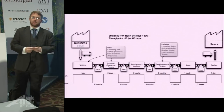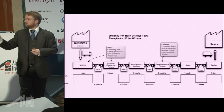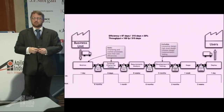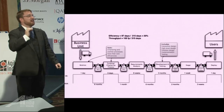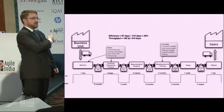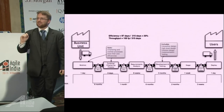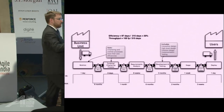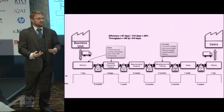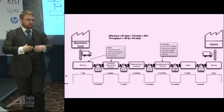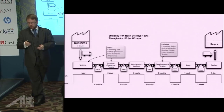This is a value stream map — this is a value stream. Can anyone tell me what this value stream map is for? Waterfall software development. I've used an agile lean process, a value stream map, to define a waterfall process. Why? Because we can. Any repeatable process that has a value at the end of it is a candidate for a value stream map. So let's talk about some of the primary components of the value stream map and what you're seeing.